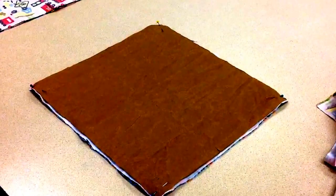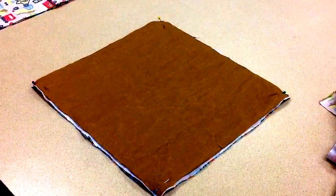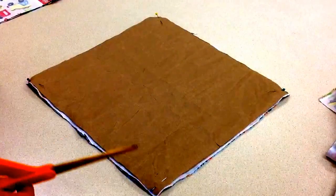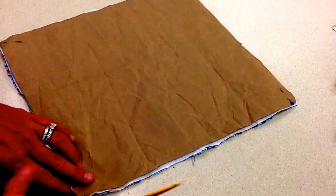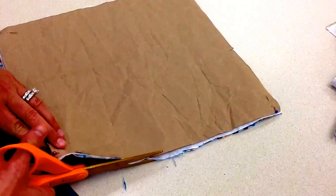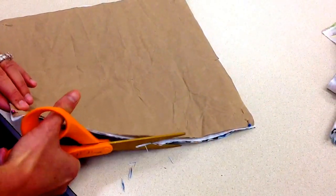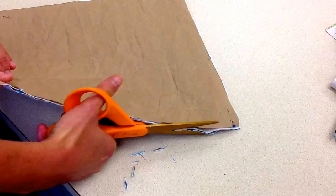After you have cut out around your pattern, I want you to take a look at your cutting and trim any necessary edges. I have a little bit left over on this side. You want to make sure it's as close to perfect as you can get so that your squares are even.